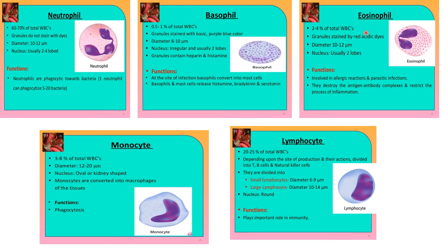The third type of granulocyte is the eosinophil. It forms 2 to 4% of total WBCs. Granules are stained by red acidic dyes. Diameter is 10 to 12 nanometers and the nucleus is usually 2 lobes. Their function is involvement in allergic reactions and parasitic infections. They destroy the antigen-antibody complex and restrict the process of inflammation — that is, they stop further inflammation.